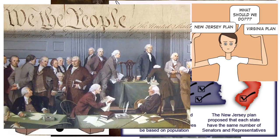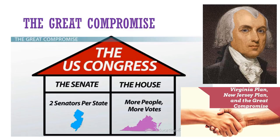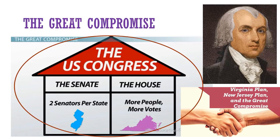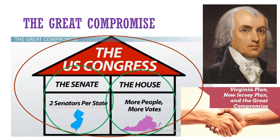Draw Virginia and New Jersey arguing over who should get more representatives in Congress next to your notes. The solution was introduced by James Madison and is known today as the Great Compromise. Madison combined both ideas so that both big states and little states could be happy and feel like they were respected and represented in Congress fairly, enabling both sides to agree. Go ahead and draw Congress as one house with two parts — title one side the Senate with two senators per state, and the other side the House of Representatives with more people, more votes. A quick sketch of New Jersey on the Senate side and Virginia on the House side wouldn't hurt either.